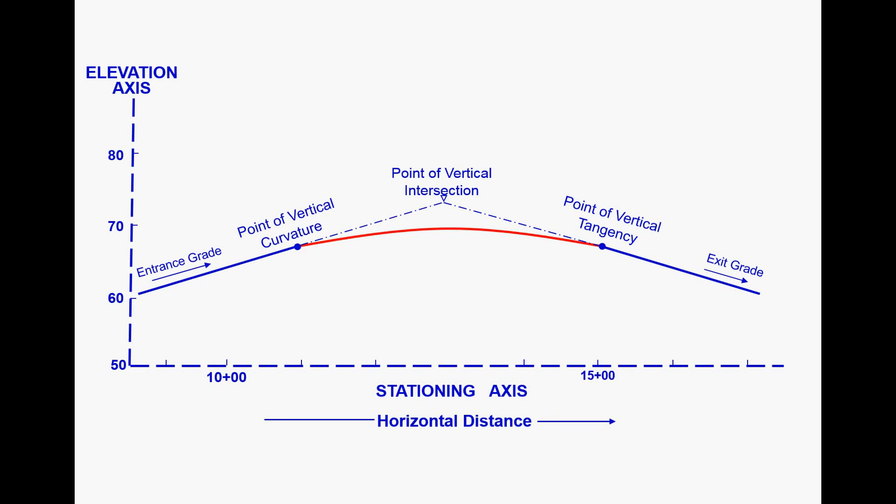The other important piece of information we need for drawing contour lines is the elevation along the center line of the roadway. This will be derived from the vertical alignment of the road.